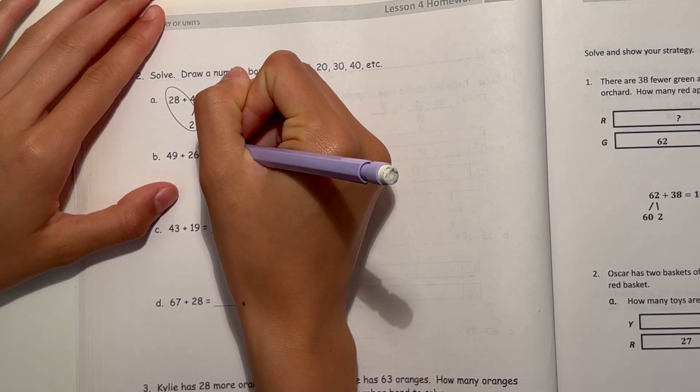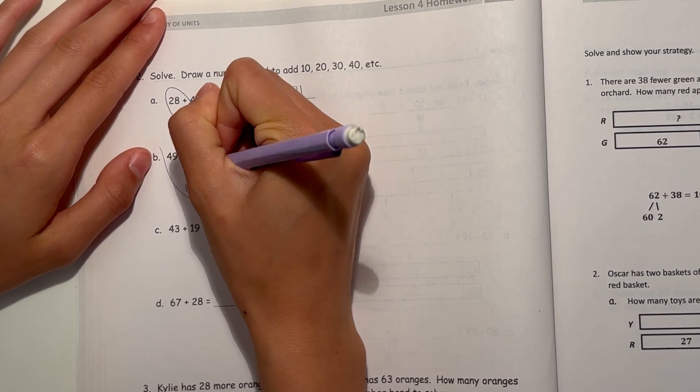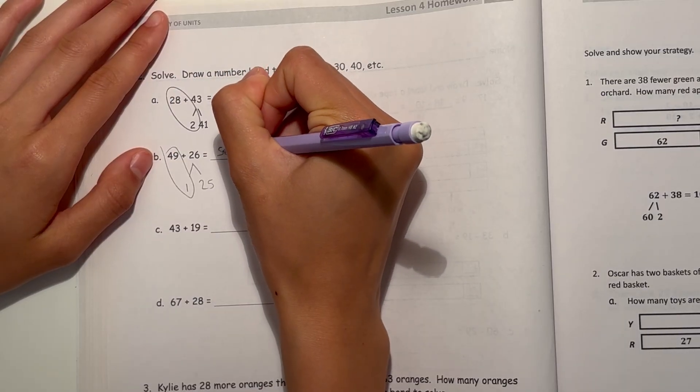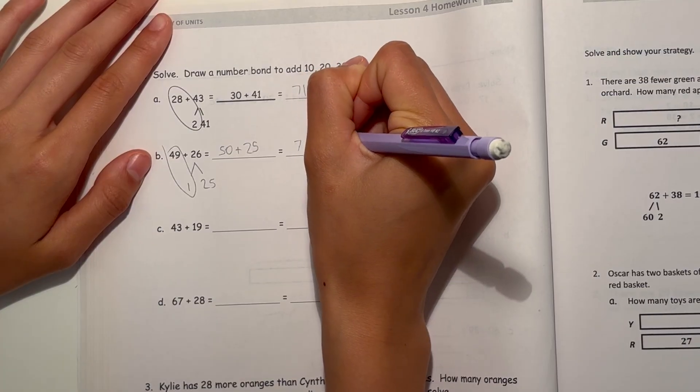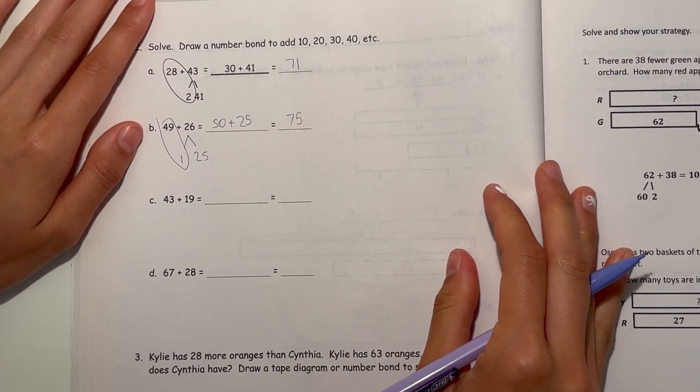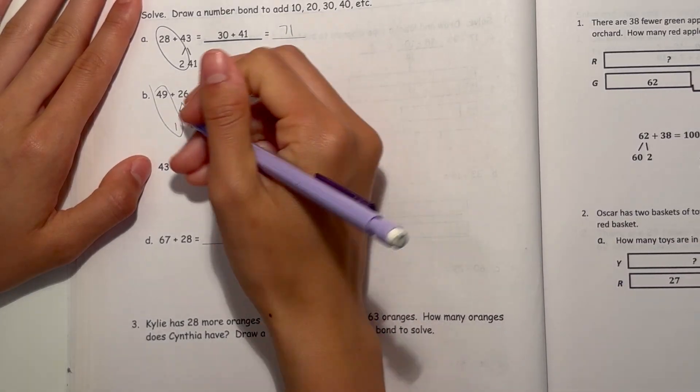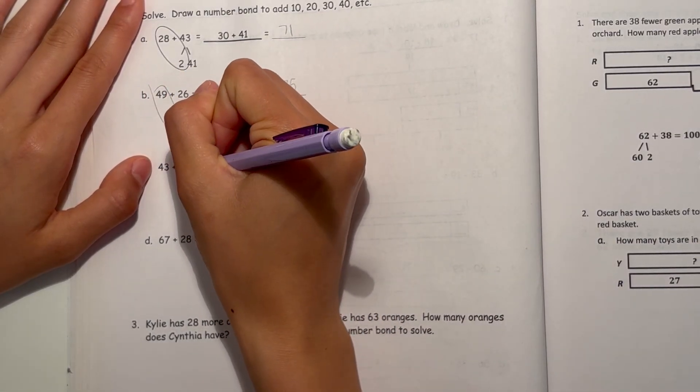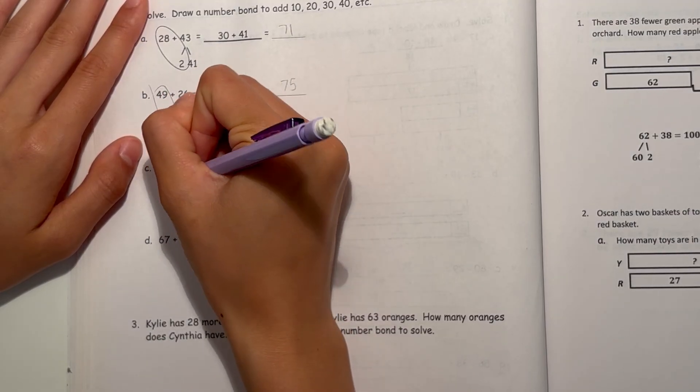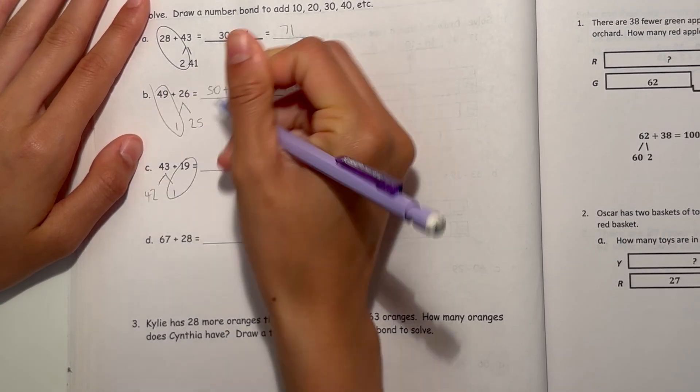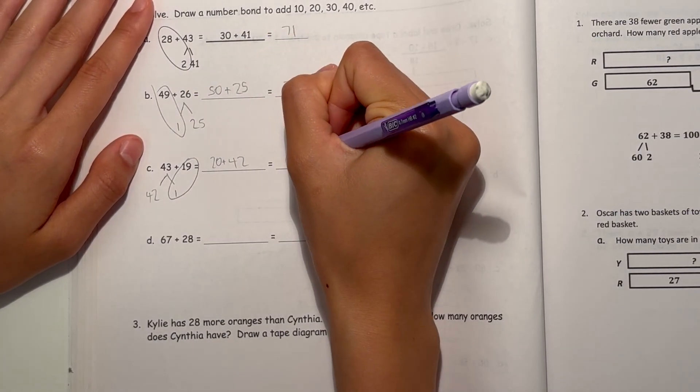So 49 and 26, we're going to take out 1, which gives us 25, because we can group this together to get 50, then plus 25, which is 75. Alright, and C, 43 plus 19. So I'm going to take this one, take out 1. This can make 20, and that gives us 42 left. So 20 plus 42, that gives us 62.